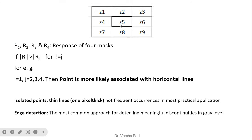To detect whether a particular point belongs to a vertical, horizontal, plus 45, or minus 45 line, all four masks are applied to that point. The responses are taken as absolute values. Where the response is greatest, that determines which type of line the point belongs to. For example, if R1 (horizontal mask) gives a value greater than R2, R3, and R4, then point z5 belongs to a horizontal line.